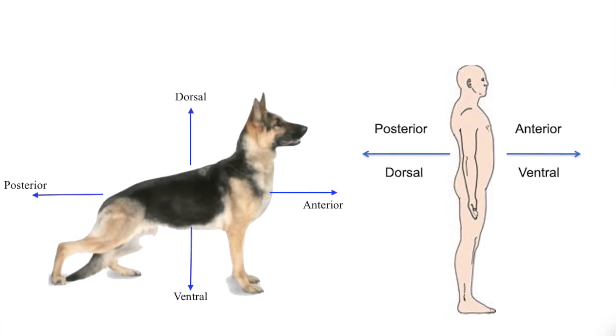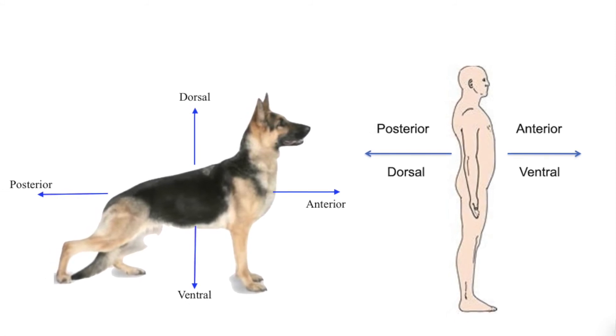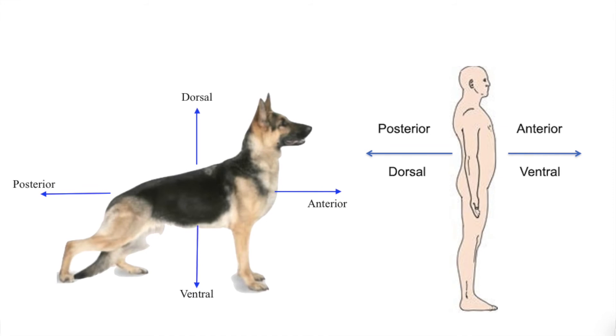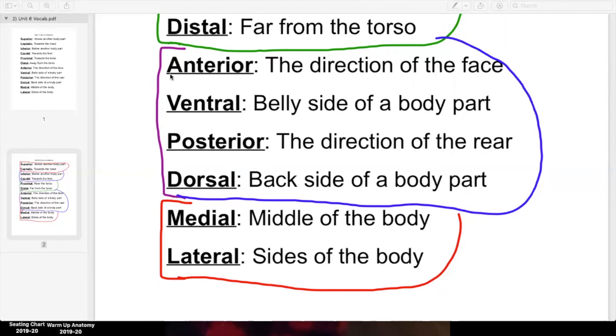Because not every living thing on this planet is a human being. Most animals walk around on all fours, which means their belly is usually facing down and anterior, their face is facing forward still. So belly side would be different for your dog or cat. So these two words are the same for us, but they're different for other animals.